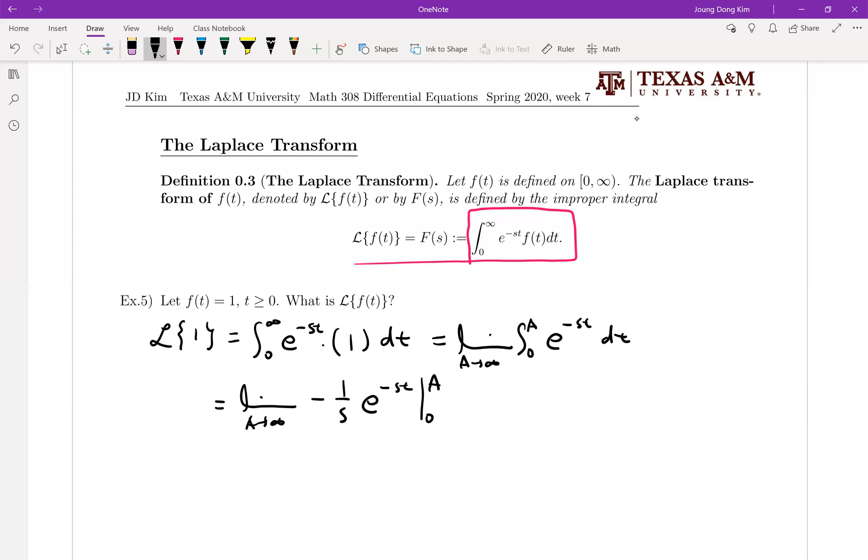Then plug in a first. We can write minus 1 over s in front of your limit because the limit is working for a only. Then plug in a is e to the minus sa, and plug in 0 which is e to the 0, and we know that is equal to 1.